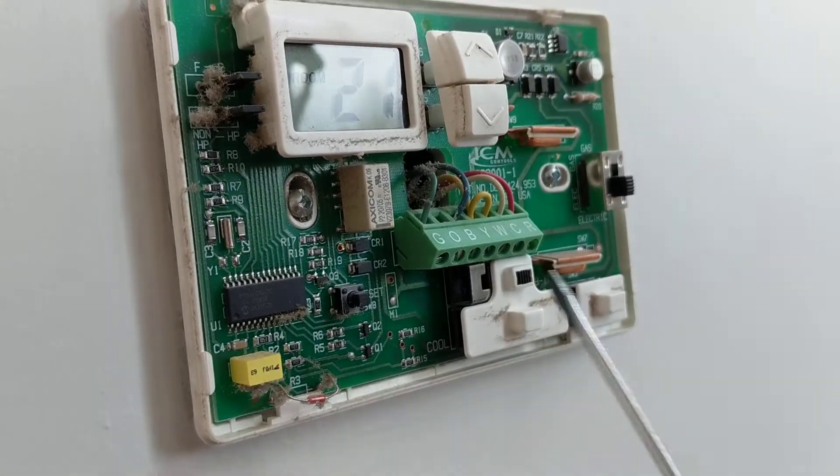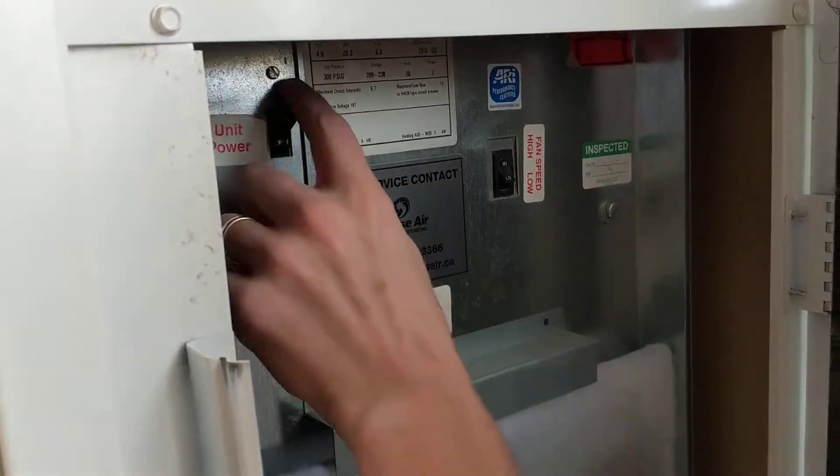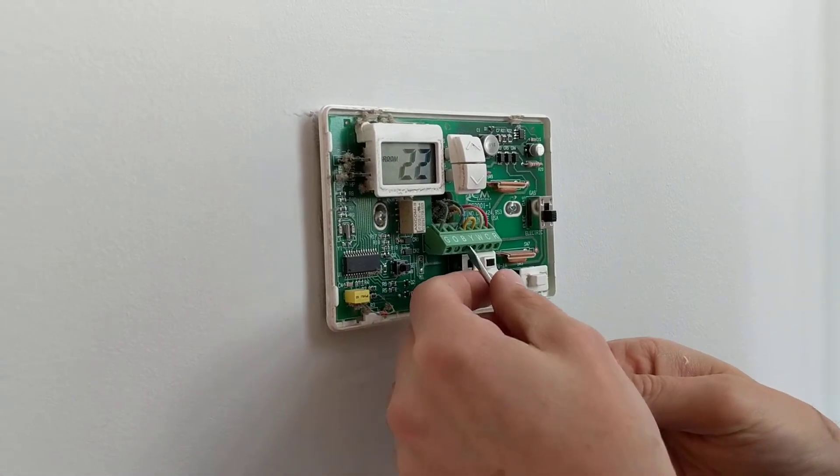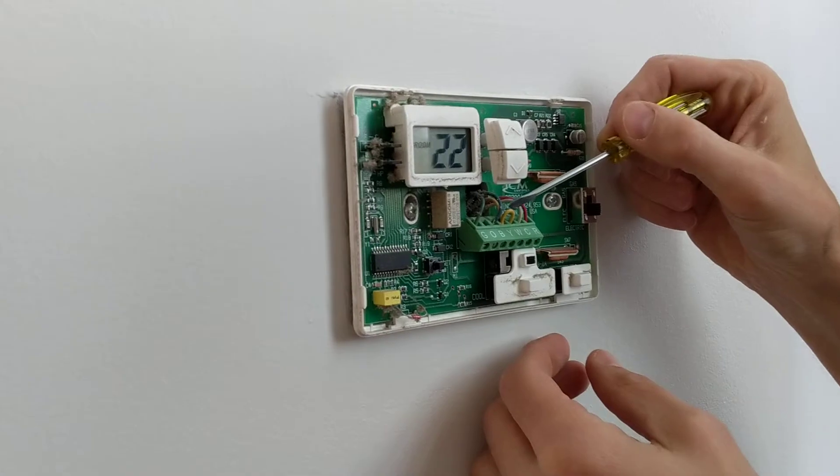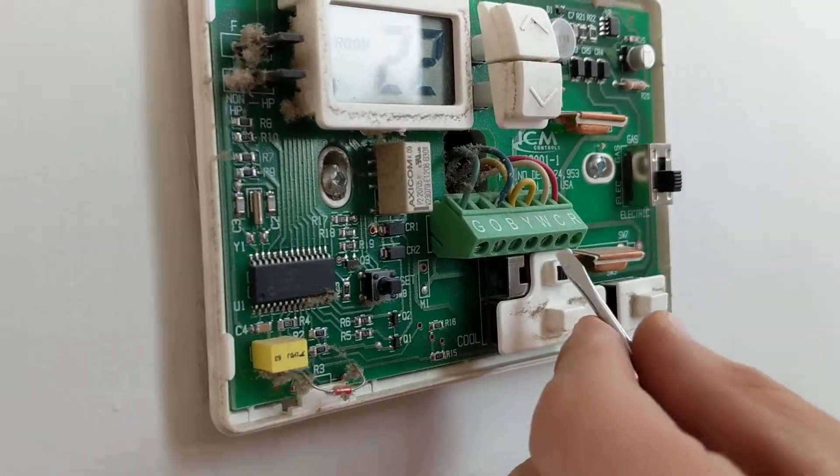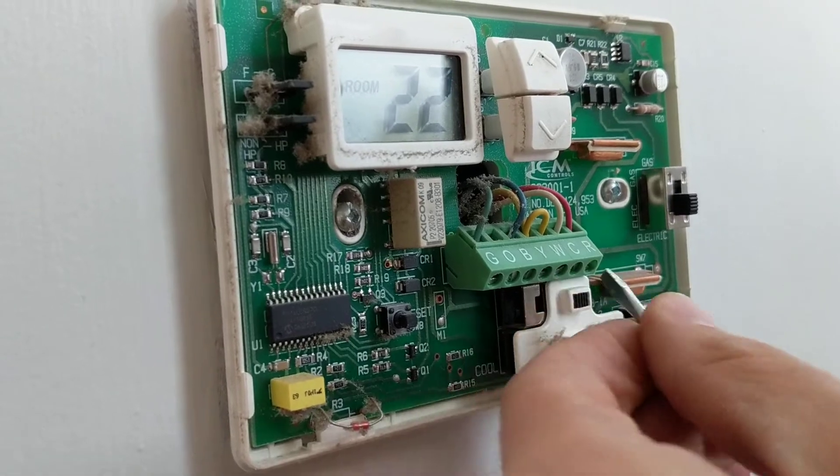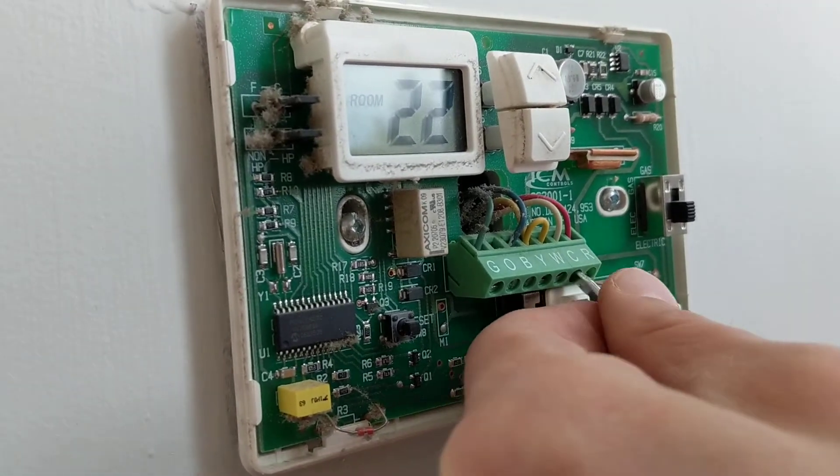Oh before we do that just make sure you turn off your unit which is there. Power off and so the little u-shaped part in there you need to keep that. So we're going to make sure that we attach that onto the new thermostat.